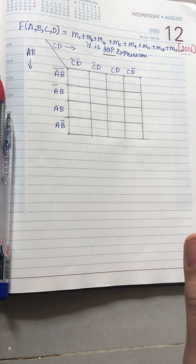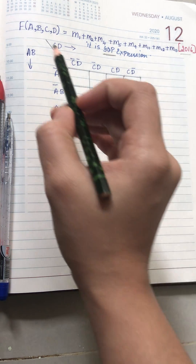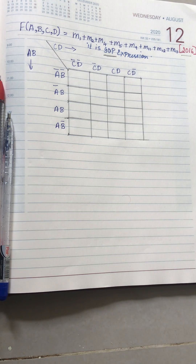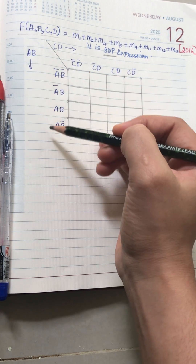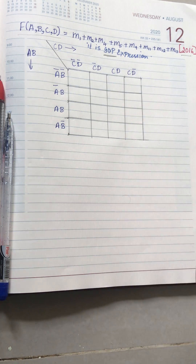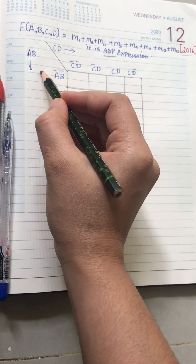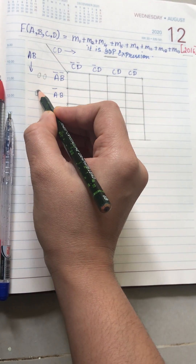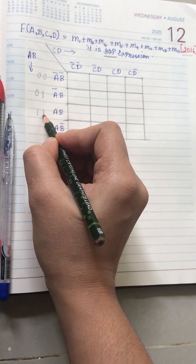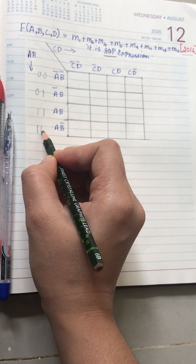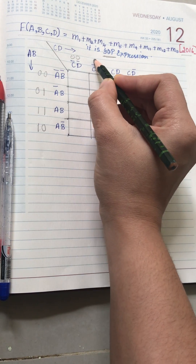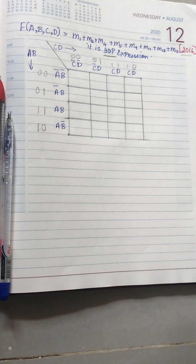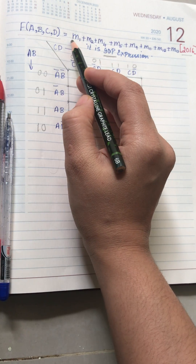Here they have given you need to solve SOP — SOP means sum of product. The function is F of A, B, C, D. In the K-map table, A and B are used in the rows and C and D are used in the columns. A-bar B-bar means 0,0; A-bar means 0, B means 1; A,B means 1,1; A means 1 and B-bar means 0. In the columns, C,D goes 0,0 — 0,1 — 1,1 — 1,0. Wherever bar is there that is 0, wherever bar is not there that is 1.